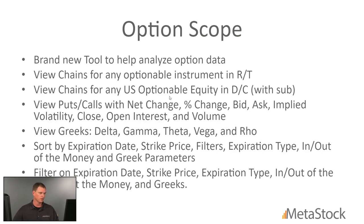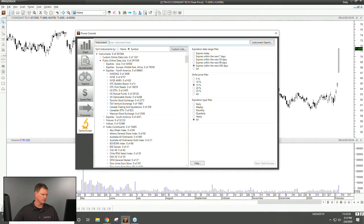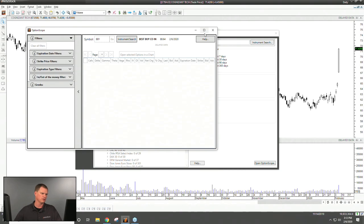Options Scope shows puts, calls, expiration dates, bid, ask, and implied volatility, along with all the Greeks. You can filter and sort by expiration dates. Let me open it — type in a symbol like Best Buy, set the expiration range to 90 days, and click 'Open Options Scope.' Like Quote Center, it's its own floating window.